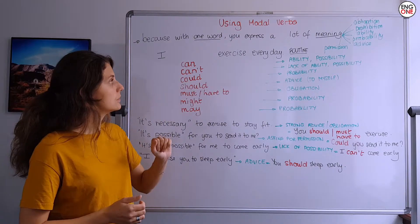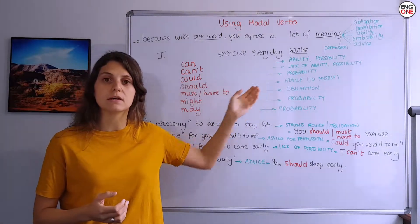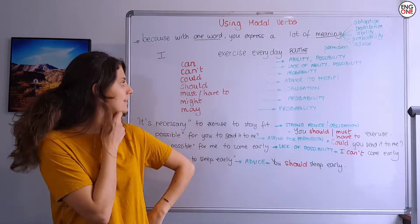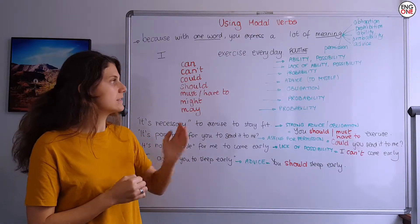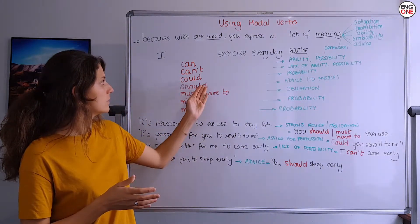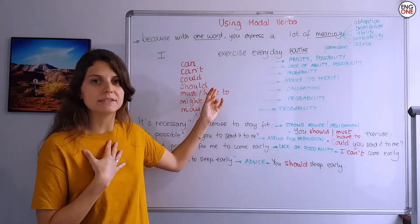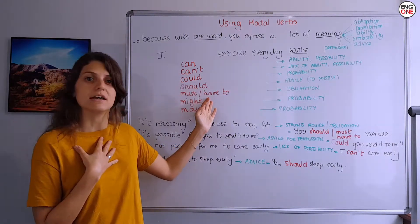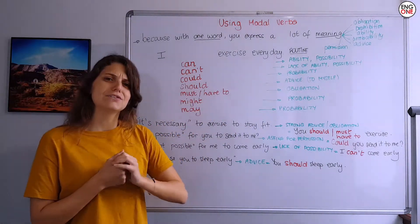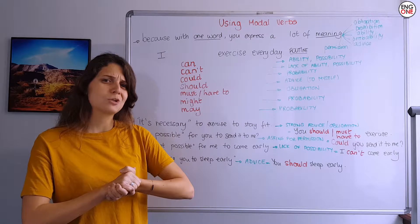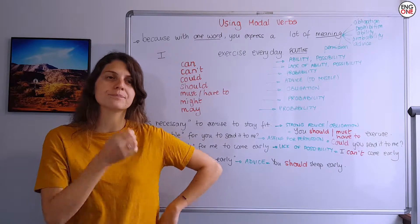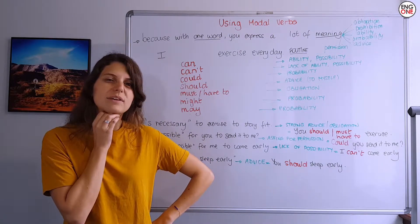Now, 'I could exercise' — this is also probability. 'I could exercise every day, but no, I don't want to.' 'I should exercise' — this is for advice. 'I really should exercise every day' — almost a piece of advice I give to myself. 'I must exercise' or 'I have to exercise' — this is obligation. 'I might exercise every day, but I'm not sure I will' — this is more probability about the future. I'm thinking next month — I might, but I don't think I will because I'm lazy.